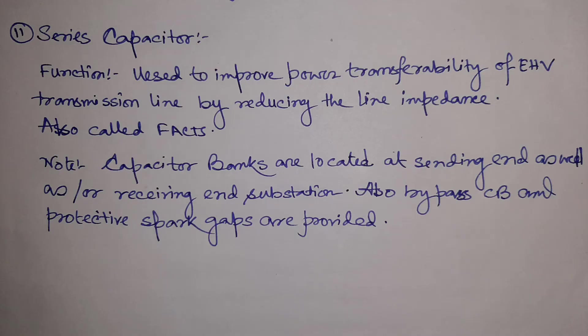In the last video we discussed shunt capacitors; now here comes the series capacitor. The purpose of the series capacitor is to improve the power transferability of an EHV transmission line by reducing line impedance. The net impedance equals the difference between the capacitive impedance and the reactive impedance, so adding a series capacitor reduces the net reactance. This is also called FACTS — Flexible AC Transmission System.